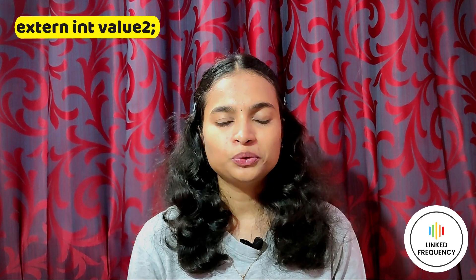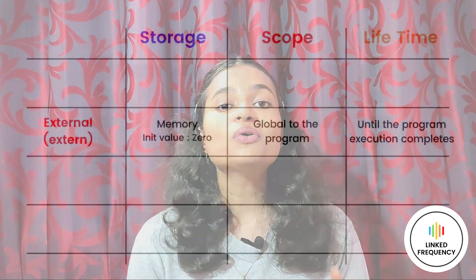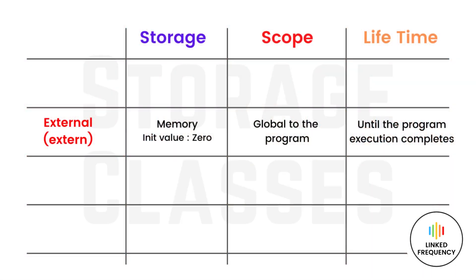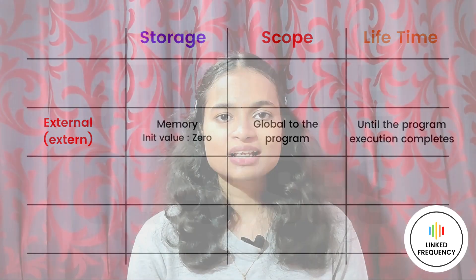The default initial value is zero and the keyword used is extern. For example: extern int value2, extern void sampleProgram. The overall features of an extern variable are: storage is in memory, default initial value is zero, scope is global, and the lifetime is active until the program execution is completed.